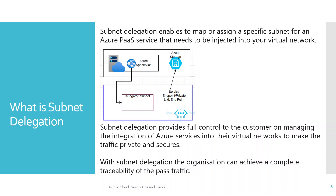As shown in the diagram, there is an Azure PaaS service sitting on the Microsoft public site. Traffic originating from an app service can be routed through your private boundary — your private network — and that is where the delegated subnet comes into picture. It provides the network injection capability where traffic routes via the private boundary. That is subnet delegation illustrated in the diagram.